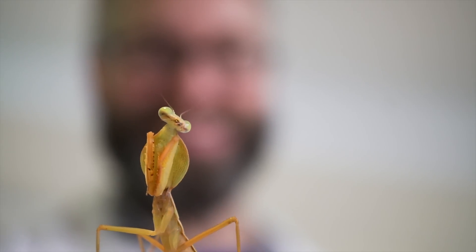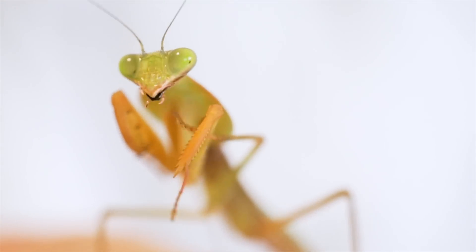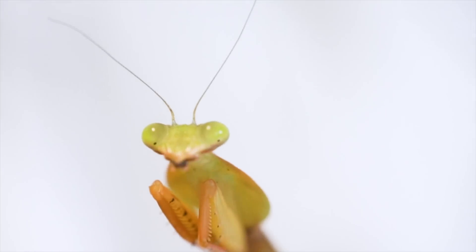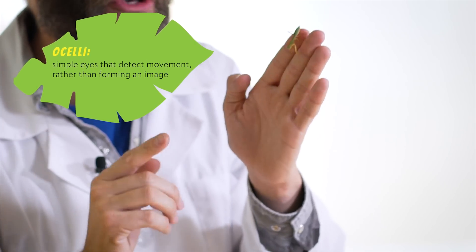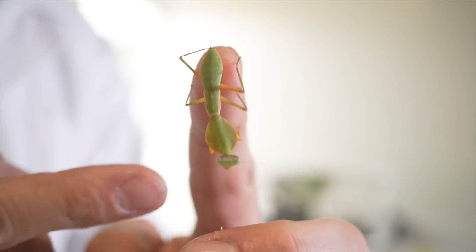One of the weirdest thing about mantises, like many other insects, is the number of eyes they have. Mantis have five eyes. They have two compound eyes here, and they have three simple eyes called Ocellae. And with a mantis that's this big, you can really get a good up-close look at those five eyes.